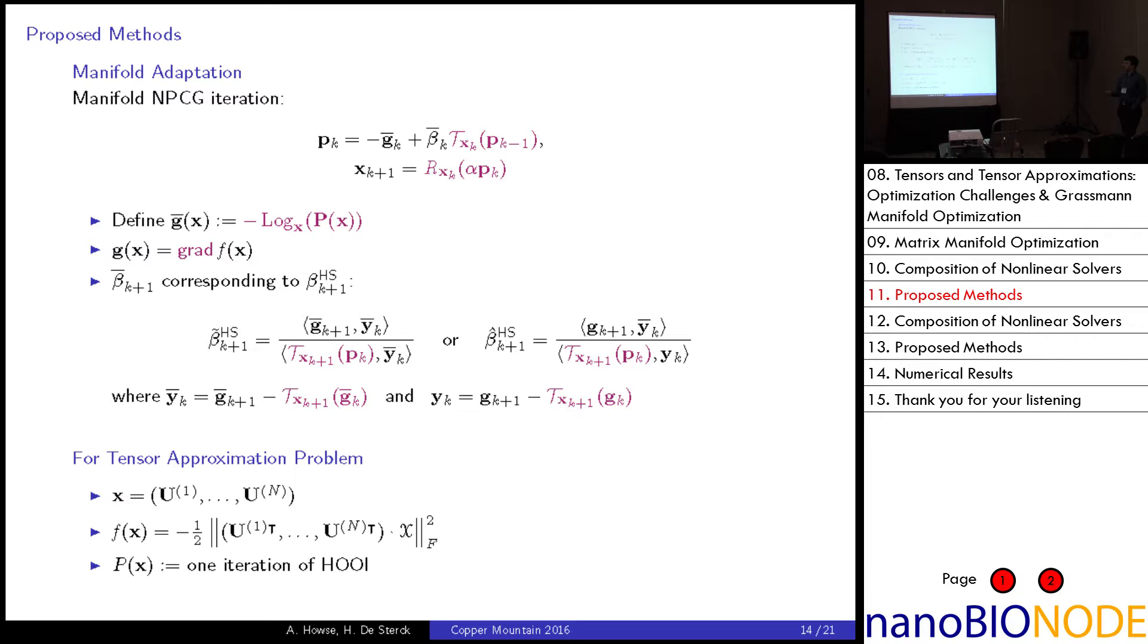In the particular case that I have been considering, the tensor approximation problem, our unknown x will just be the n-tuple of matrices that we want. Our objective function will be minus one-half the norm of this tensor matrix product squared. I am minimizing rather than maximizing, hence the negative. And for the result of our nonlinear preconditioning will be p of x, which is one iteration of the higher order orthogonal iteration. So I am using what is the workhorse algorithm for this problem and using that as our nonlinear preconditioner.